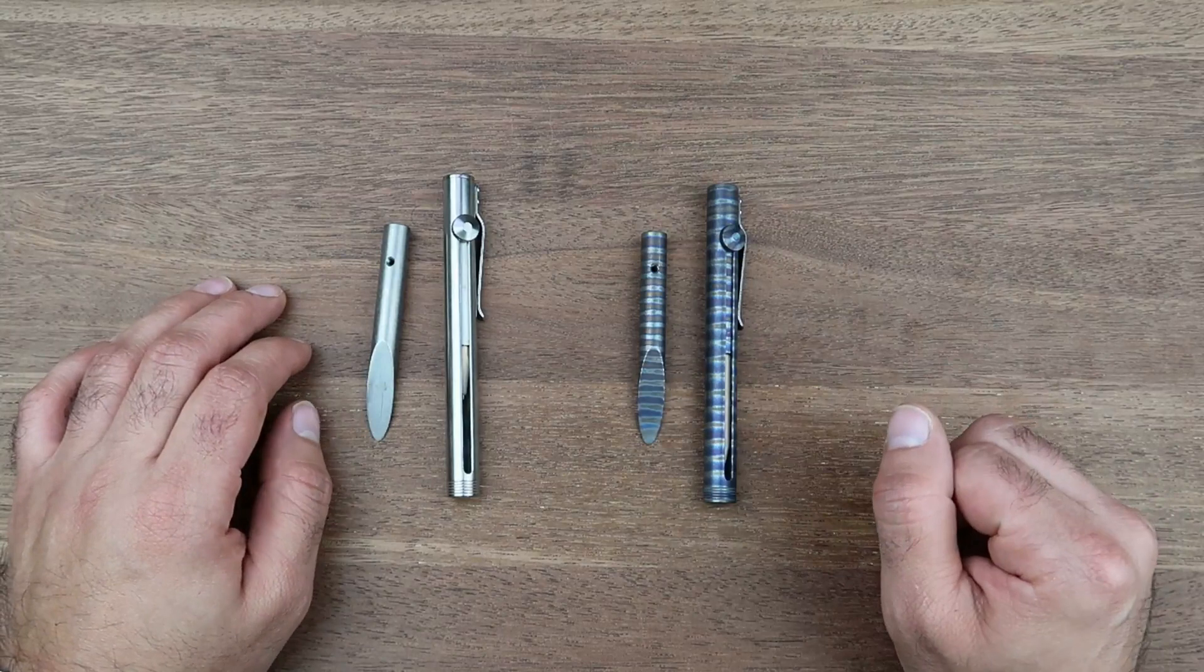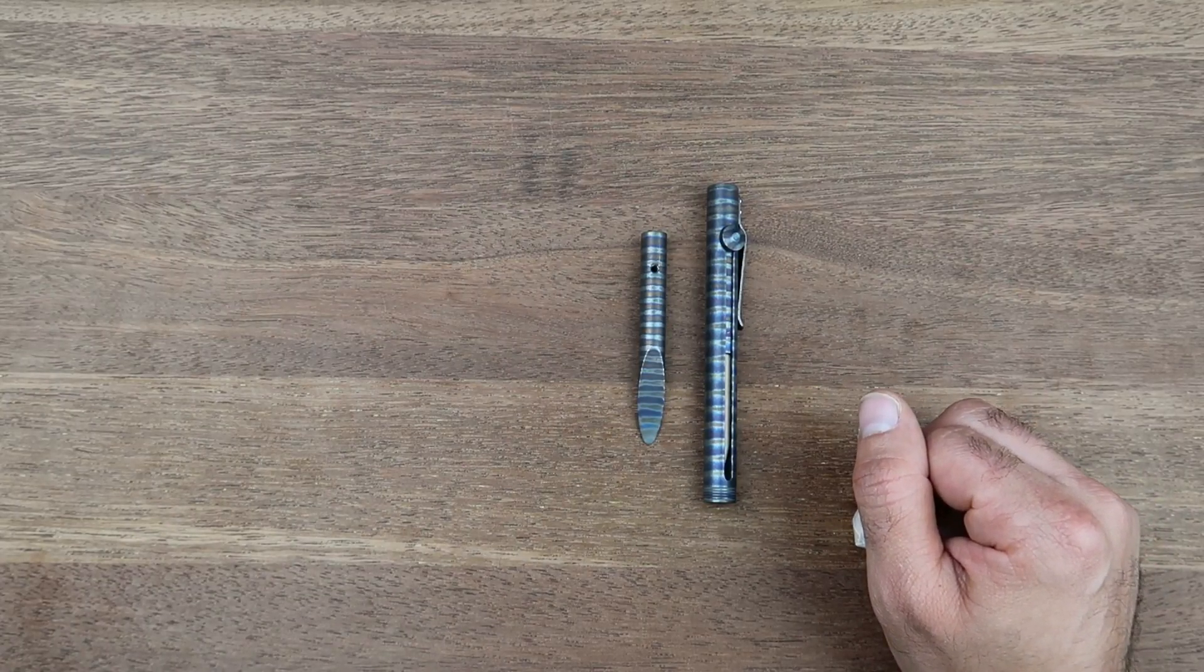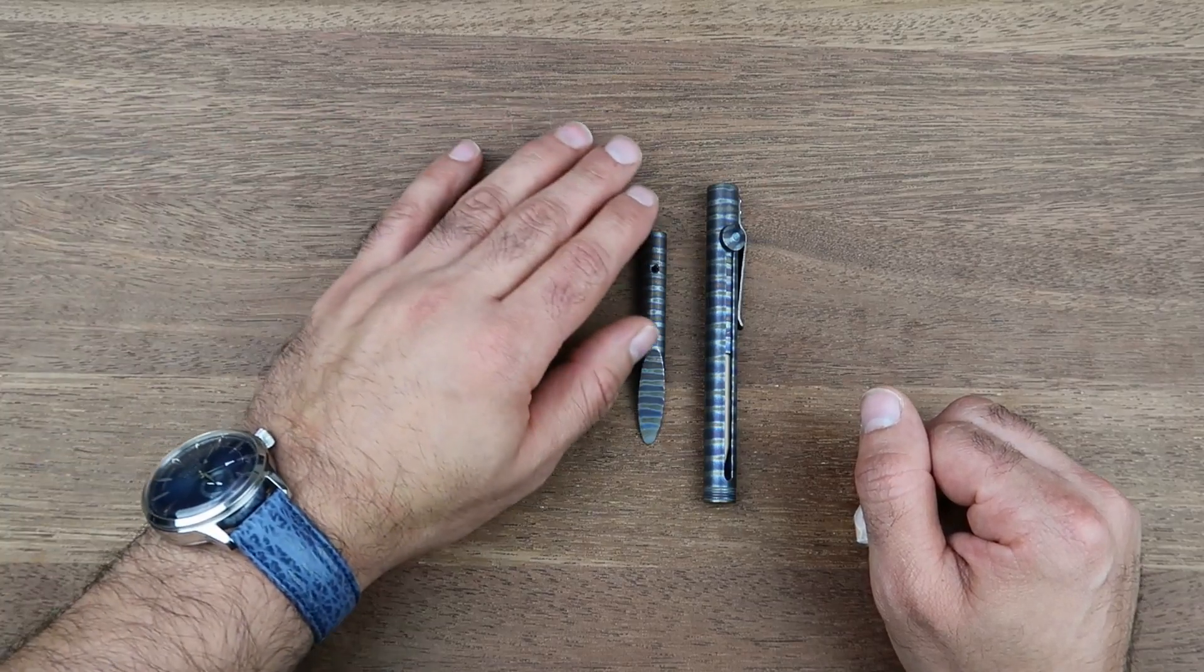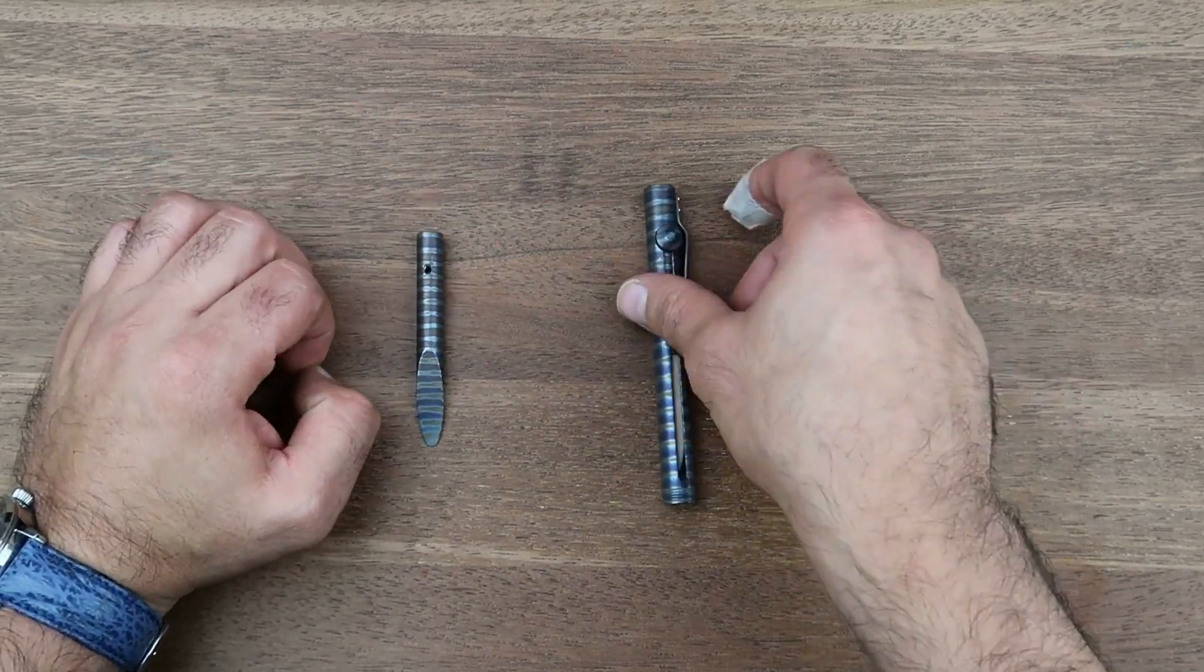One is the satin titanium finish and the other one is flame atom anodized. I'm going to start with the flame anodized first this way we're going to have better focus with the camera. If you're wondering what that part is, I'm going to show you soon.